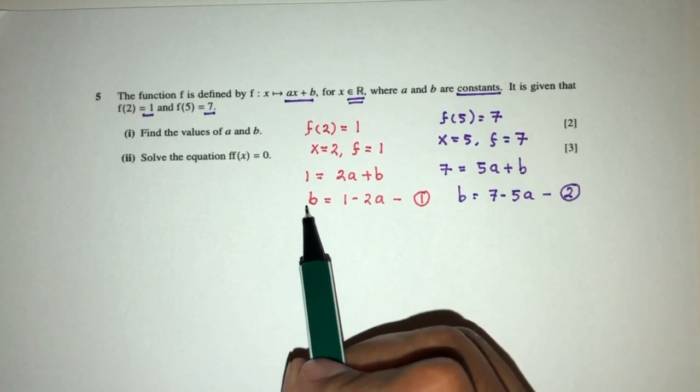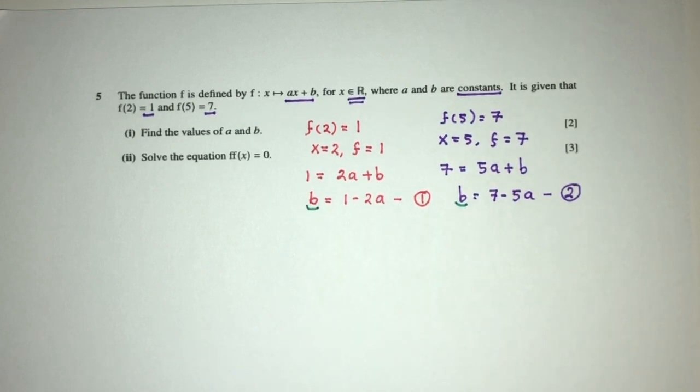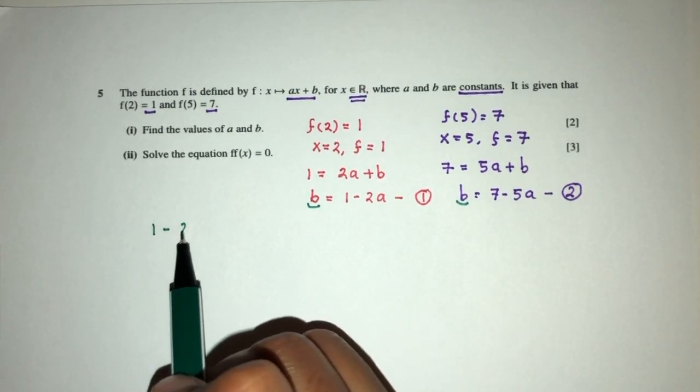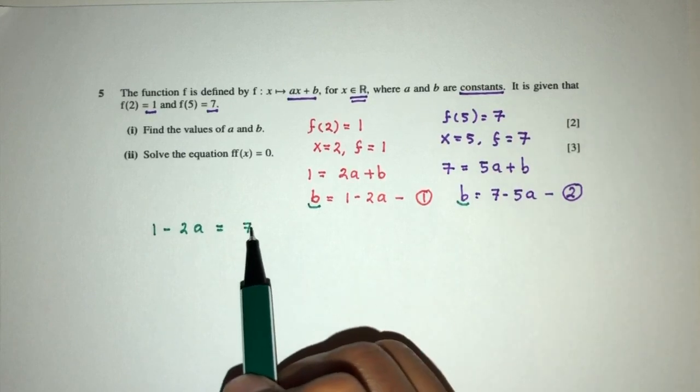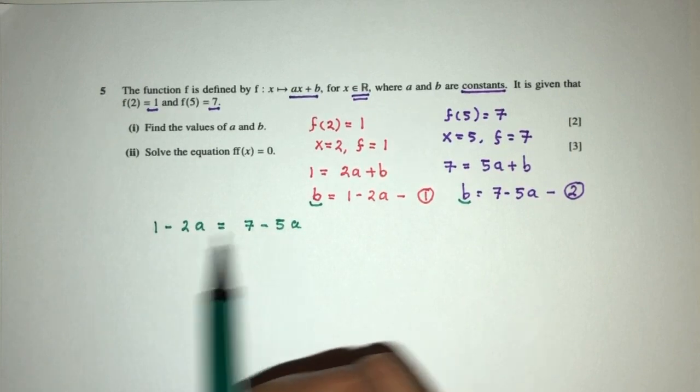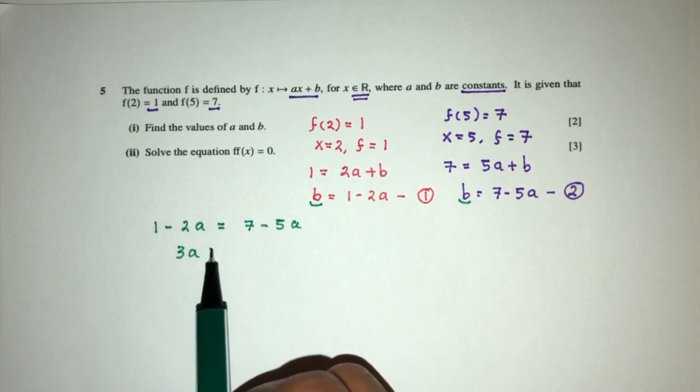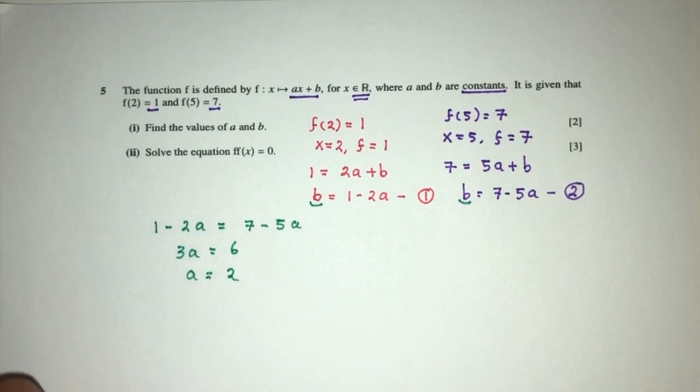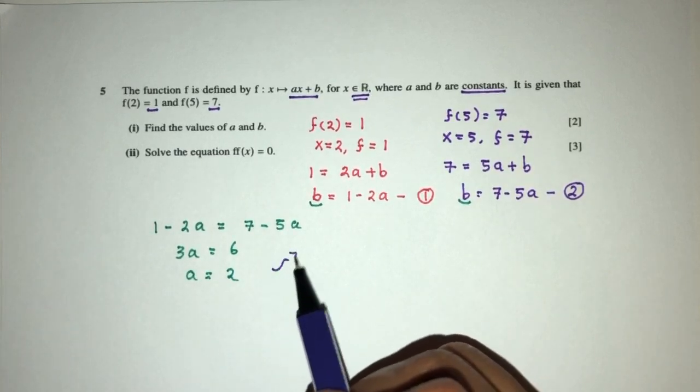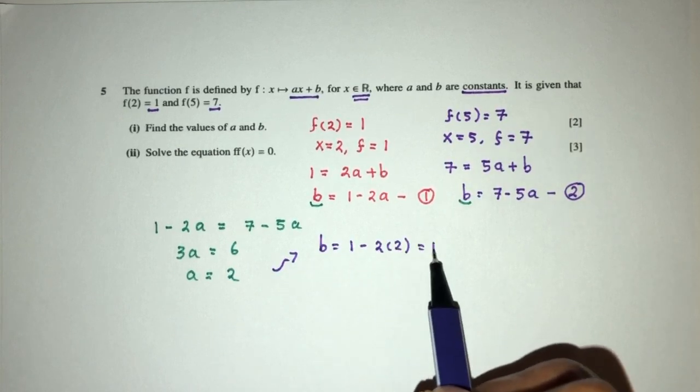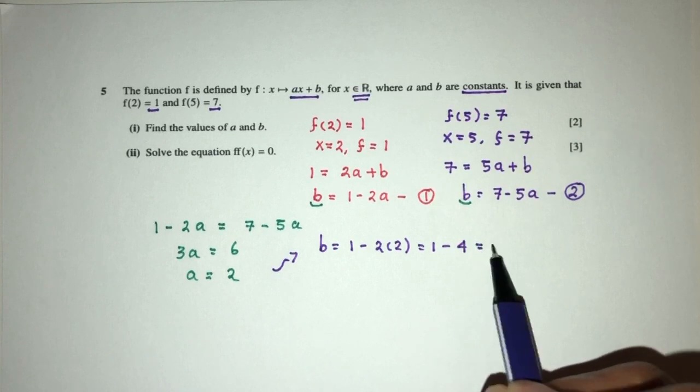So let's replace. Here we have b, here we have b, obviously here we have two equations, we have two unknowns, we are trying to solve a simultaneous equation. So we have 1 minus 2a on one side equal to 7 minus 5a on the other side. Now let's send all the a to one side, so minus 2 plus 5 will be 3a. And that will be 7 minus 1 will be 6, a will be the value of 2. Now from this, let's find the value of b. b will be 1 minus 2a, that will be 1 minus 4, and that will be minus 3.